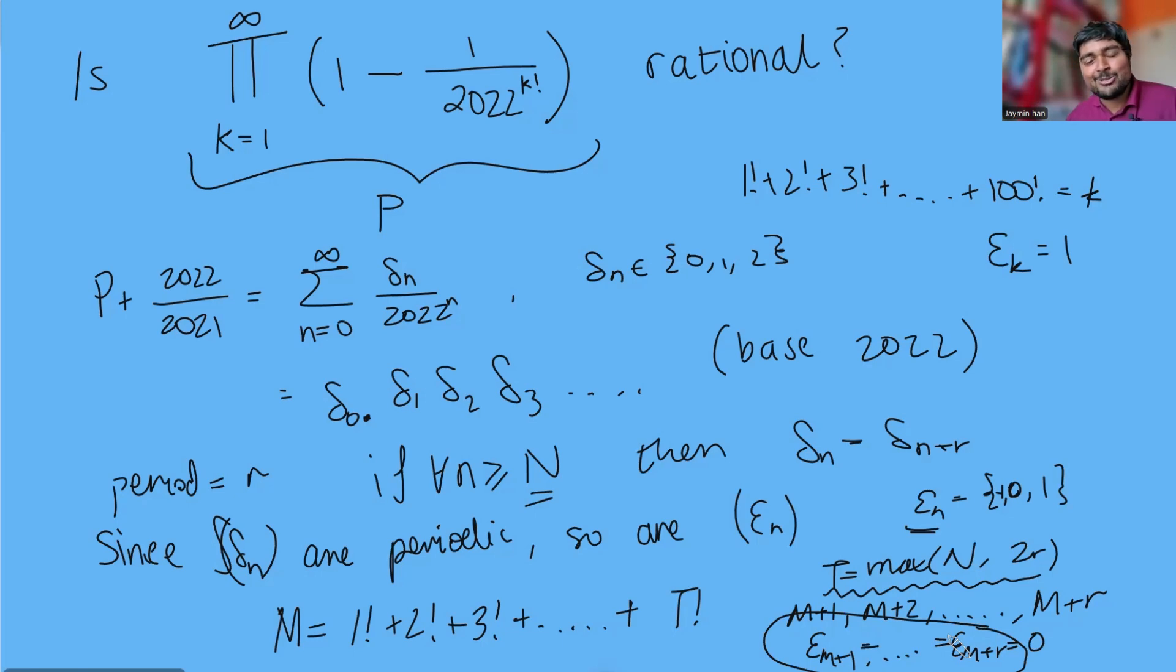I hope this solution has made sense. I think this is a really interesting problem. I've not seen a solution style like this where you show a number is irrational by thinking about the periodicity of its digits in a certain base. Anyway if you have enjoyed this solution please do give it a like and please do subscribe if you're new to the channel. Thanks so much for watching, I'll catch you in the next one, have a great day.